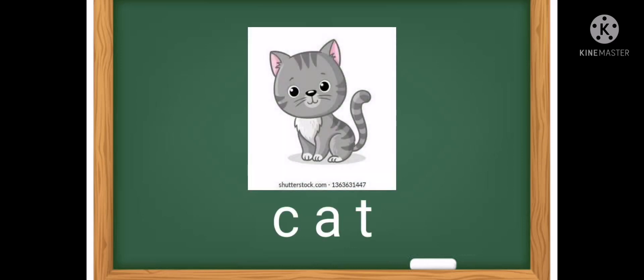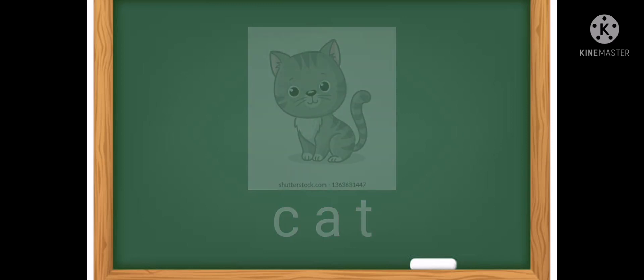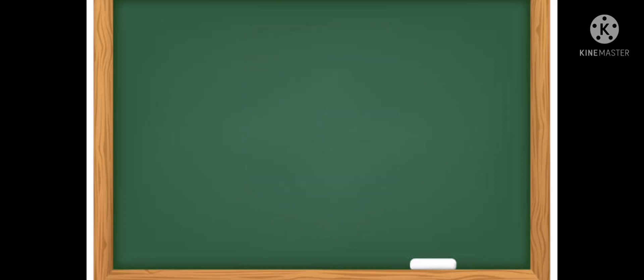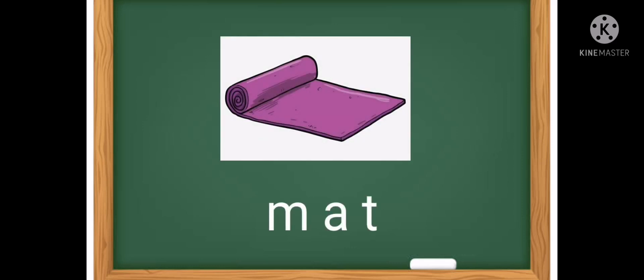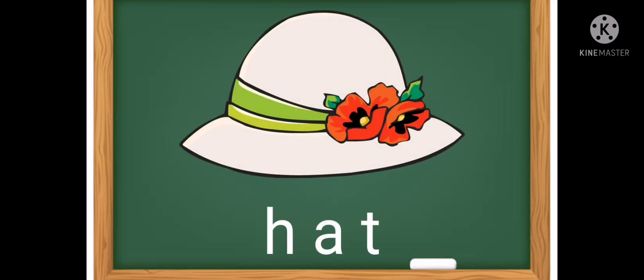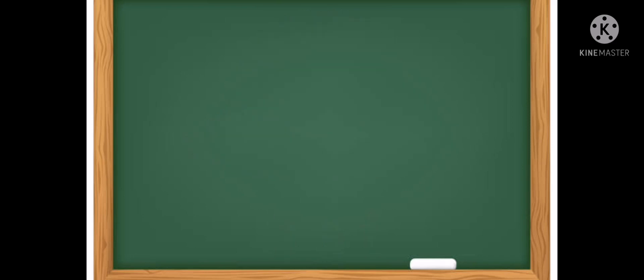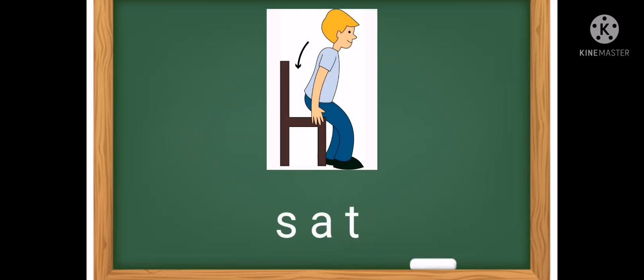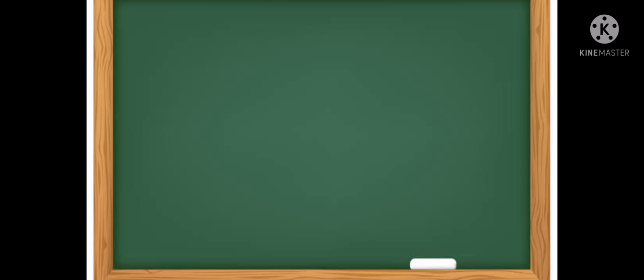Cat — C, A, T — cat. Mat — M, A, T — mat. Hat — H, A, T — hat. Sat — S, A, T — sat. Fat.